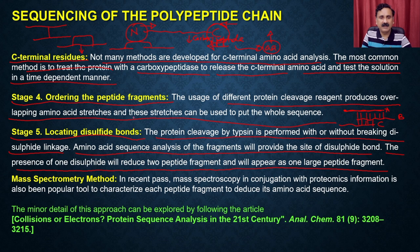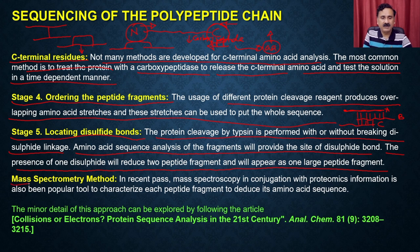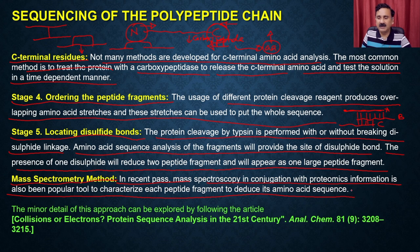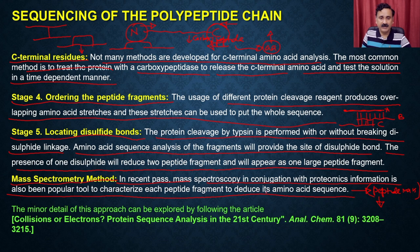Apart from these methods, with the advancement of mass spectrometry and proteomics, mass spectrometry is also being used as a popular tool to characterize each fragment to deduce its amino acids. Instead of doing sequencing, you can simply calculate the peptide mass, and that peptide mass can be used against a complete database to deduce the sequence. A reference is provided for those interested in reading more about protein sequencing.